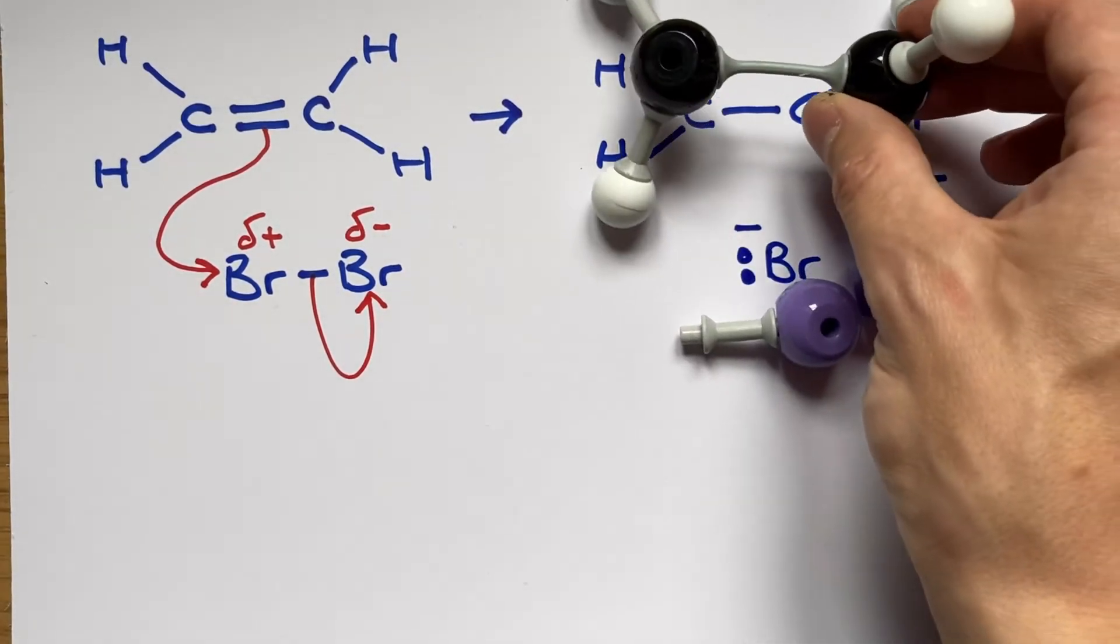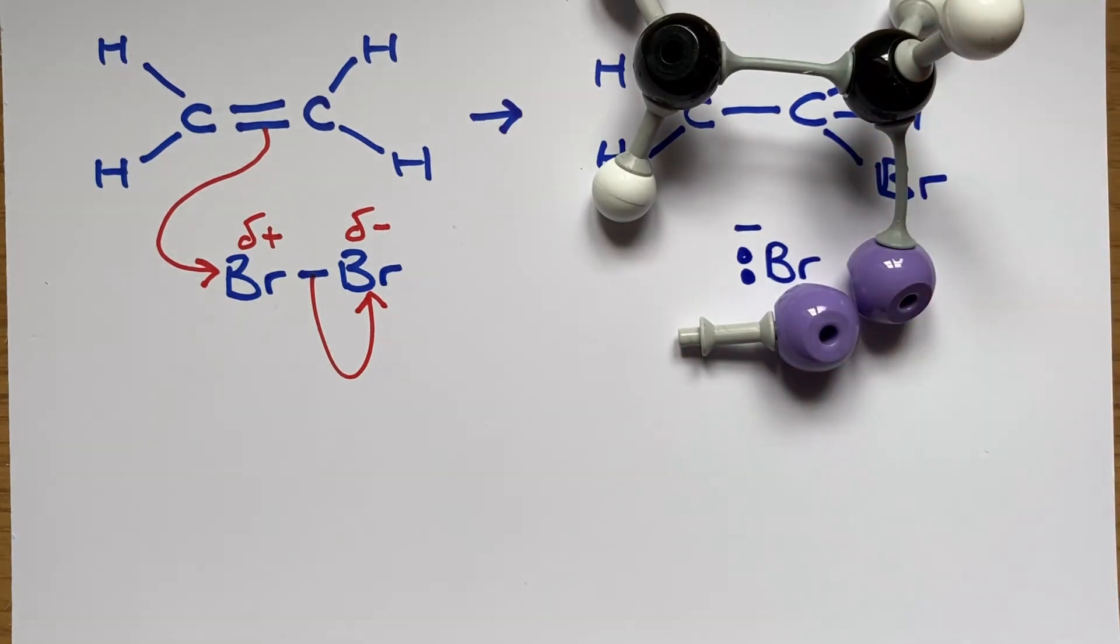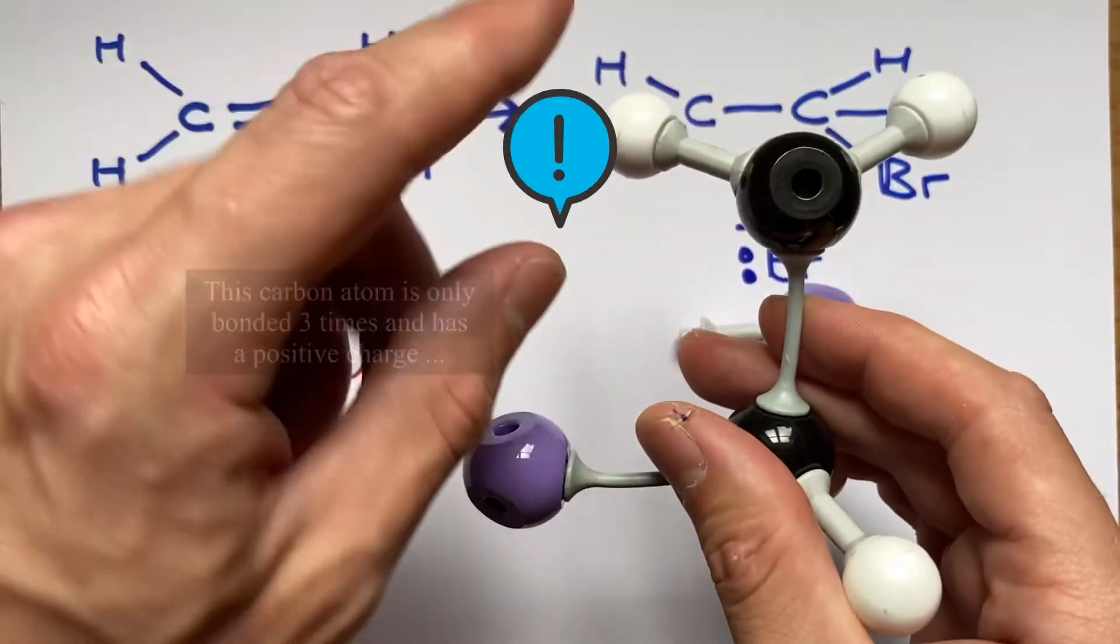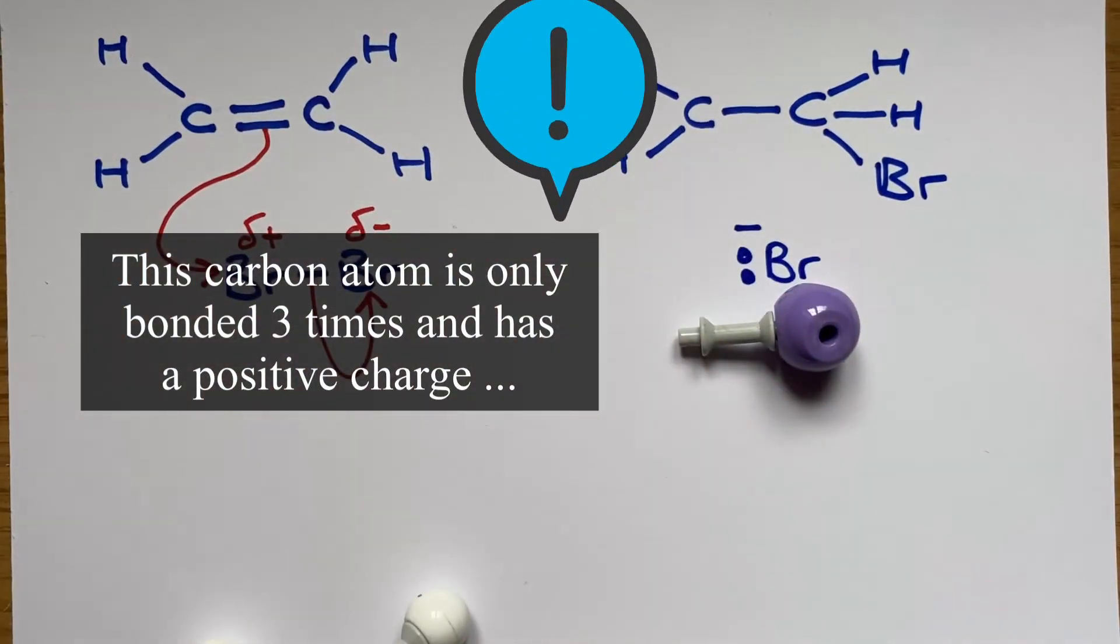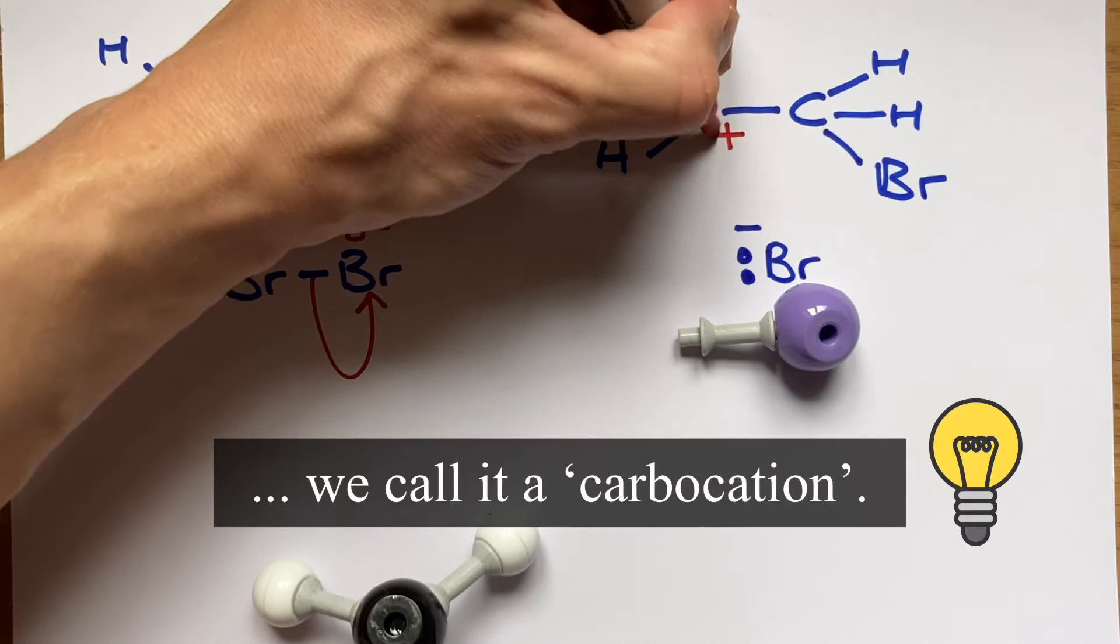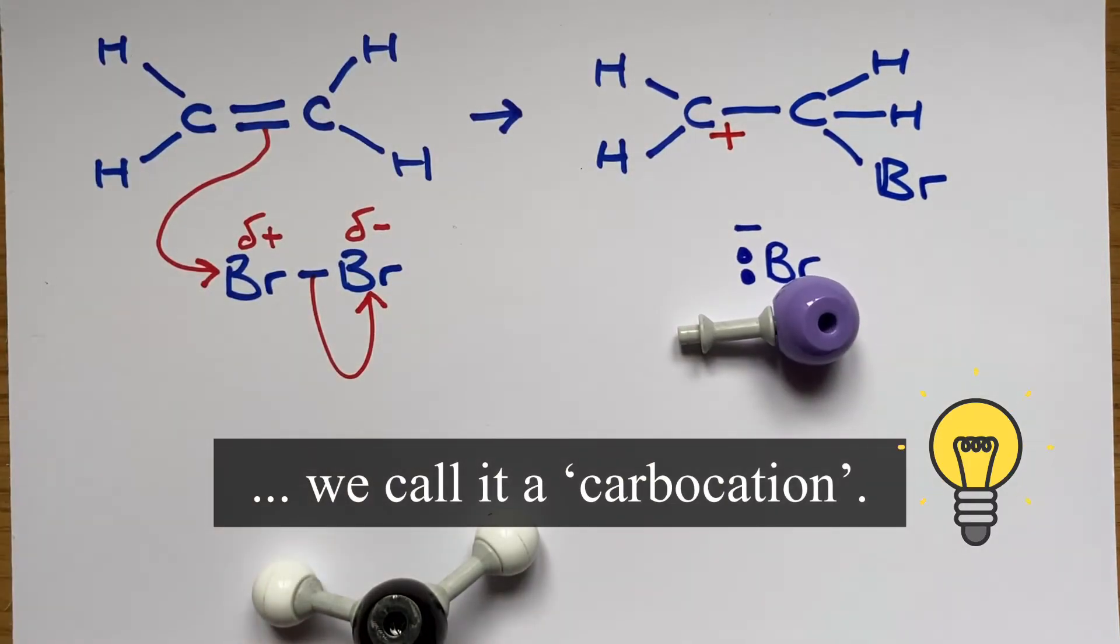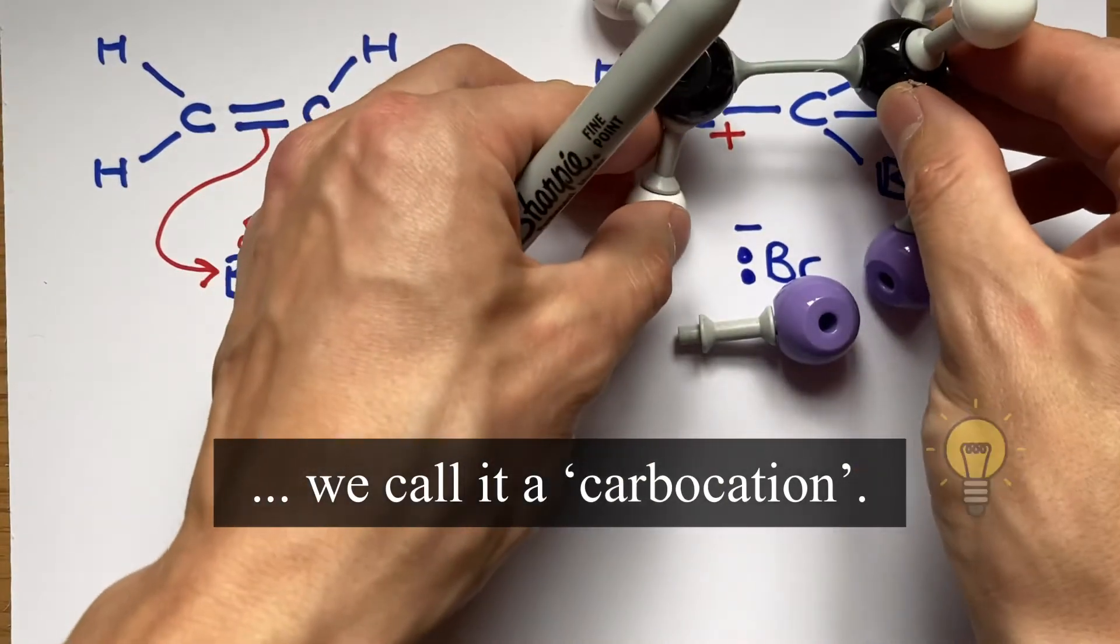I'm almost done here drawing my two intermediates, but I'm missing one important thing. This carbon atom here is only bonded three times and due to the movement of electrons in the first stage of this mechanism, it's been left with a positive charge. Therefore, it's called a carbocation.